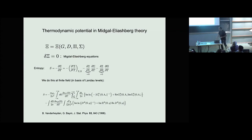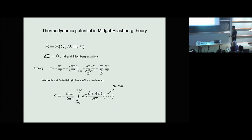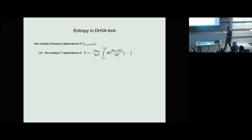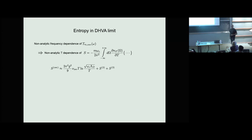But there is non-analytic self-energy dependence at the quantum critical point. That converts itself, when inserted into the frequency integrals, into non-analytic temperature dependence. At the end of the day you get the oscillatory part of the entropy of this marginal Fermi liquid at criticality, which is of the form T log T. There's one contribution here, and two more I'll walk through. Even at zero field there's a T log T contribution to the entropy of the marginal Fermi liquid; the prefactor here is the oscillatory part of the density of states, which depends on the magnetic field.